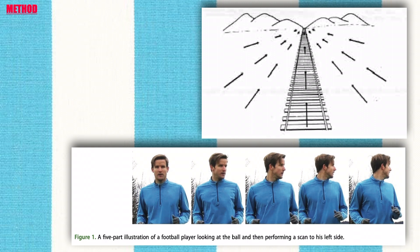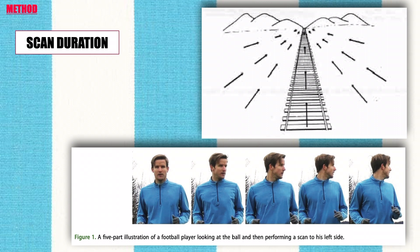All scans detected from the four players were used in the analysis, totaling 869 scans. The data collection focused on two main properties of scanning as dependent variables: scanning duration and scanning information. Scanning duration was defined as the duration of scans in centiseconds as measured by Tobii Pro Lab, measured from the first video frame in which the ball was not visible in the eye tracking video to the first frame in which the ball once again became visible.